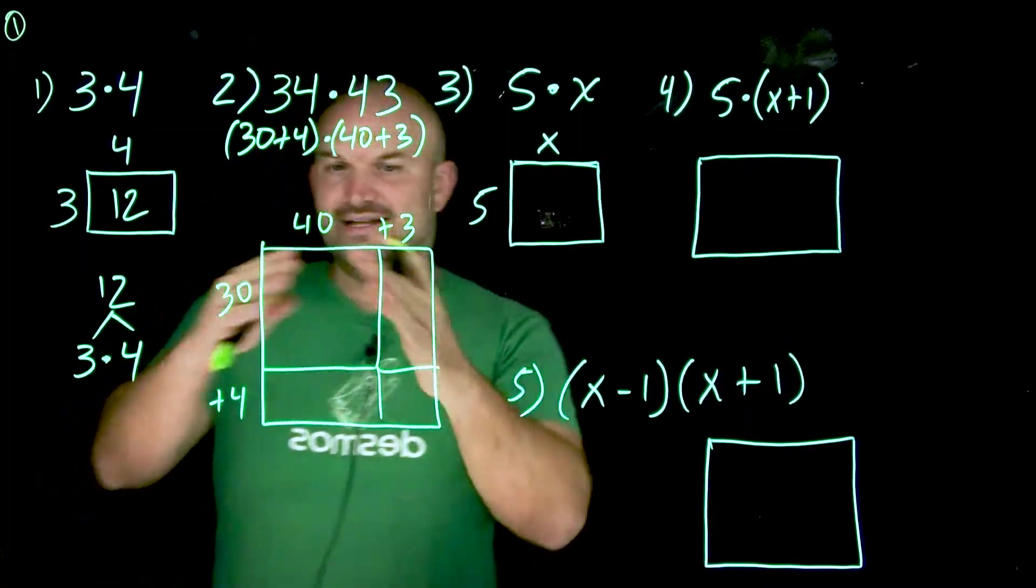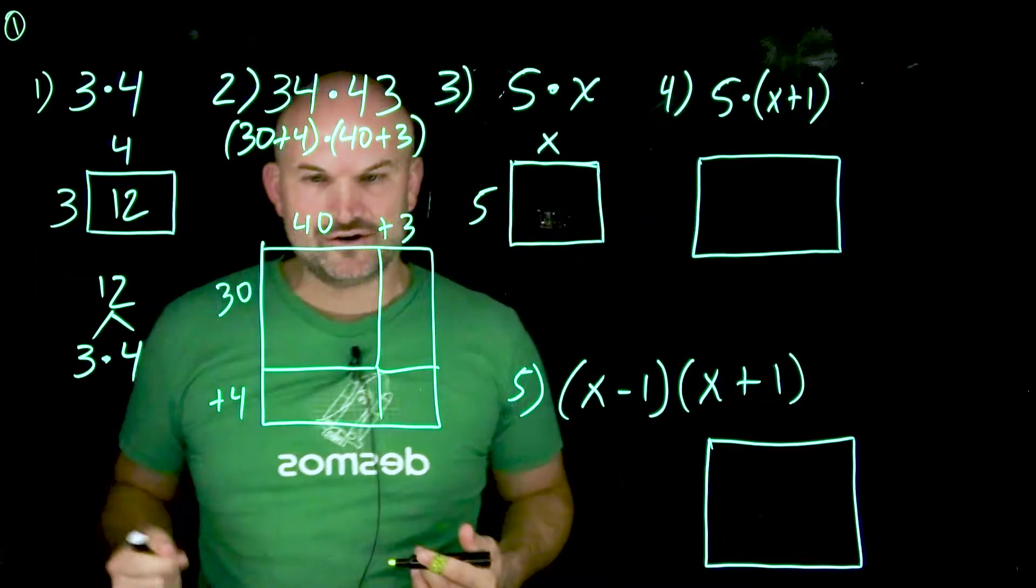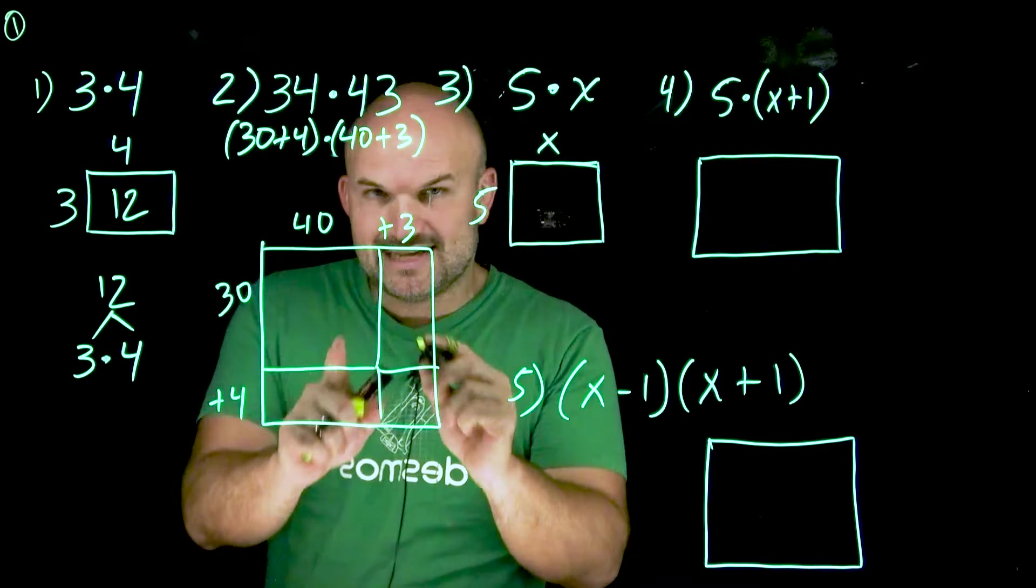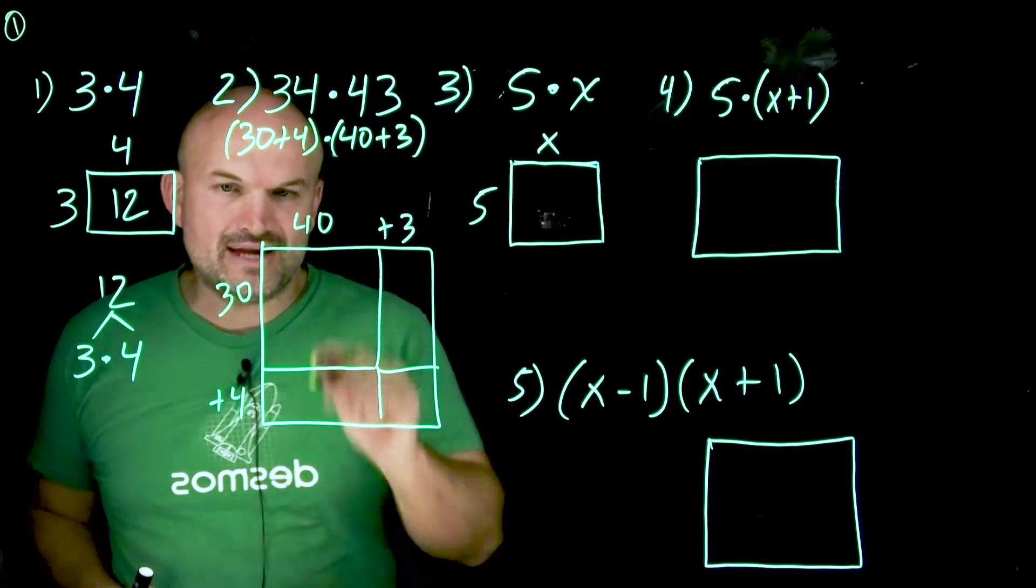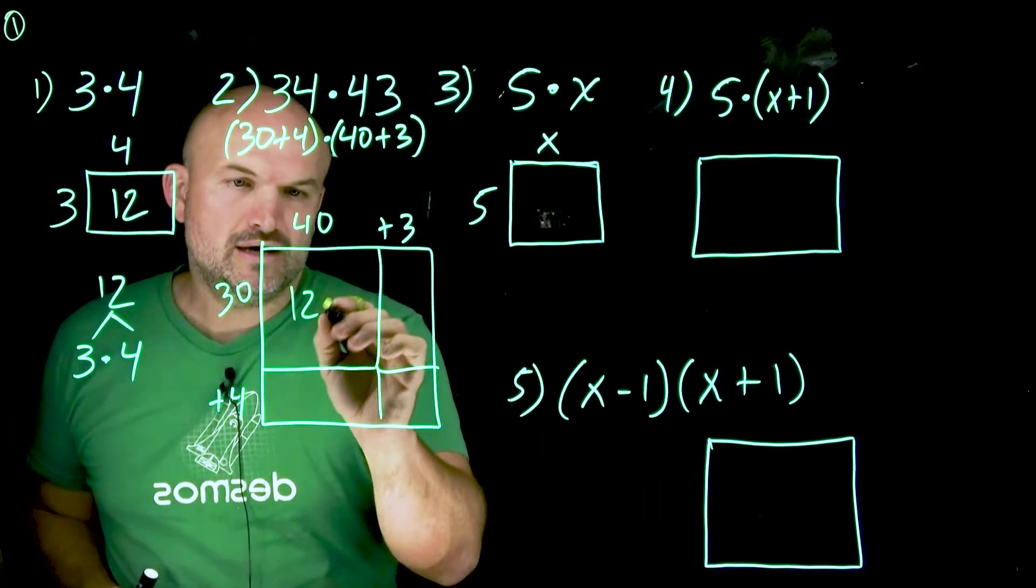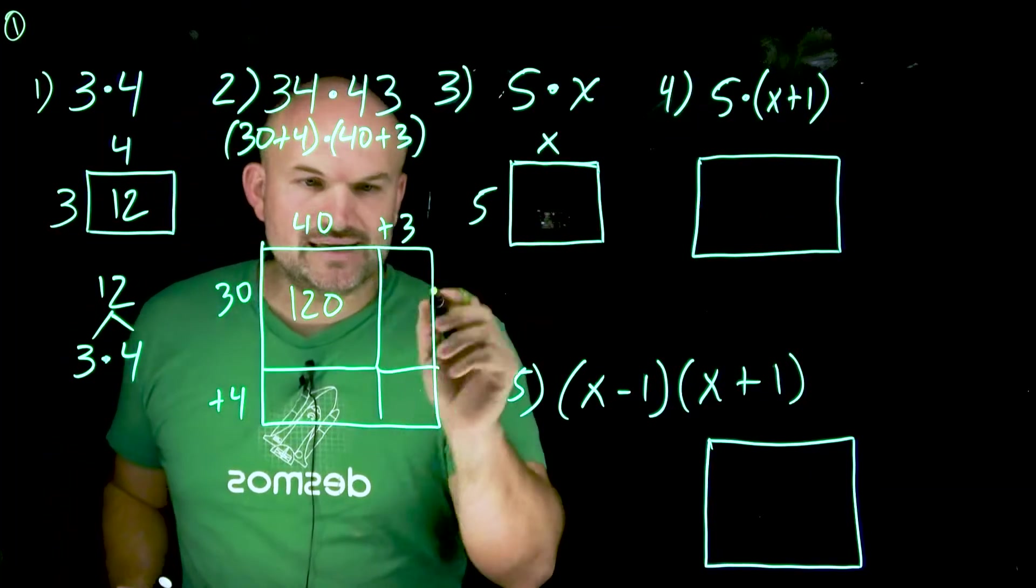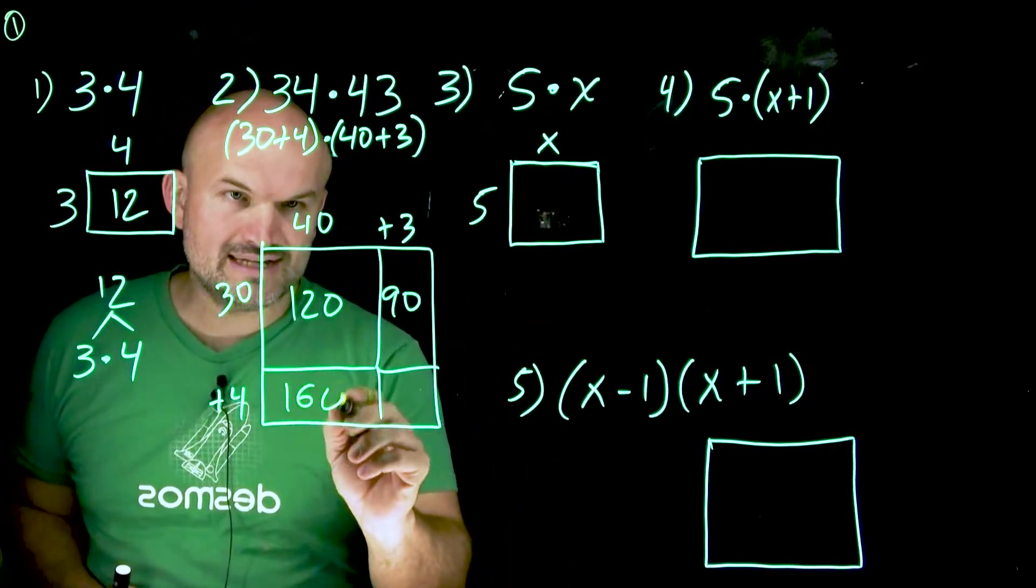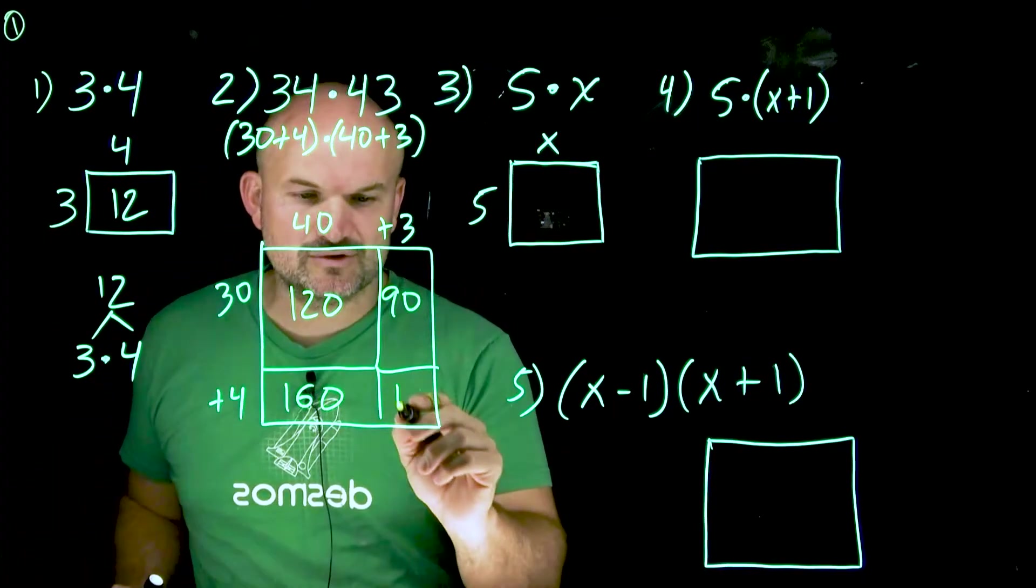Now what I can do is rather than trying to find the area of one big number and using that algorithm, I can break this down. I can find the individual areas of each of these rectangles and then add them all together to get my product. 30 times 40 is going to be 120. 30 times 3 is going to be 90. 40 times 4 is going to be 160. And 4 times 3 is going to be 12.